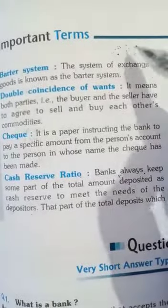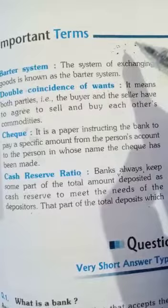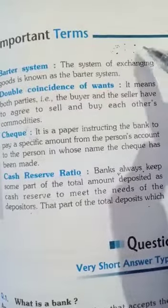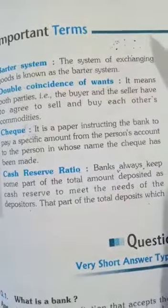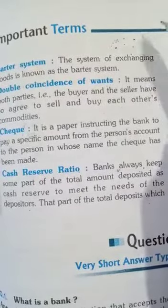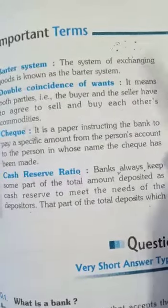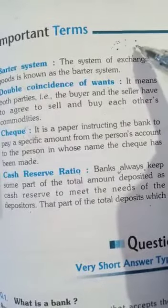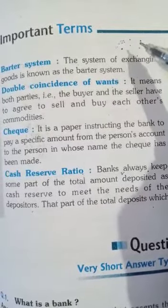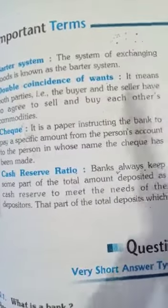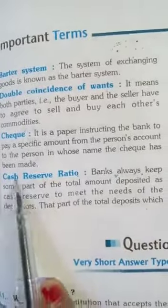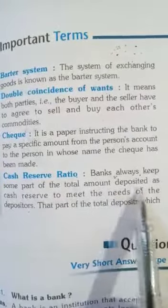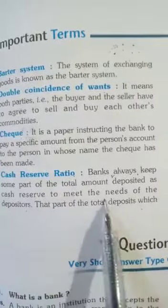Bank को अपने पास कुछ amount reserve करके रखना पड़ता है — क्योंकि हमने deposit कराया और अगर हमें need है, तो हम अपना पैसा किसी भी time bank से withdraw करा सकते हैं। तो इस condition को fulfill करने के लिए bank एक certain amount of money अपने पास reserve करके रखता है। That is Cash Reserve Ratio — bank always keeps some part of the total amount deposited as cash reserve to meet the needs of the depositors.